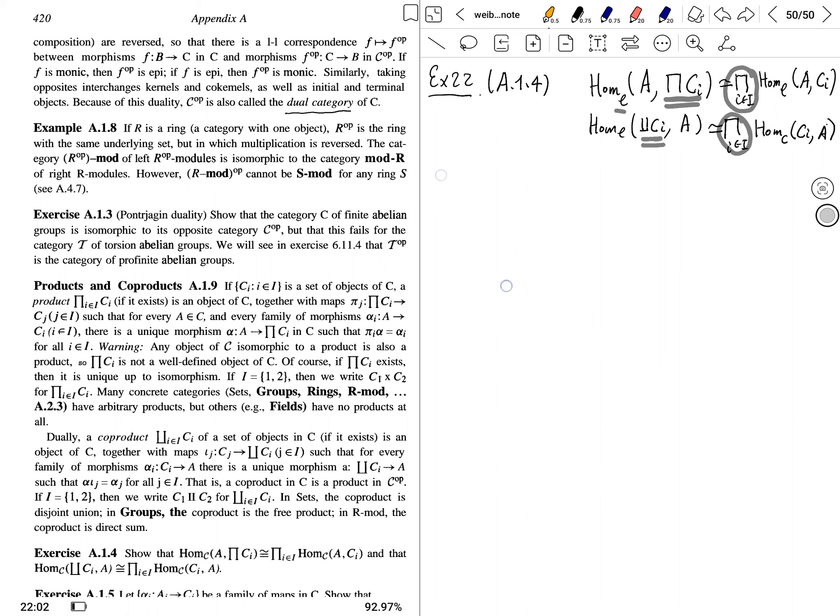Let's check by translating this isomorphism to the universal property we're familiar with. So this is saying that, firstly, product of C_i satisfying universal properties such that firstly,